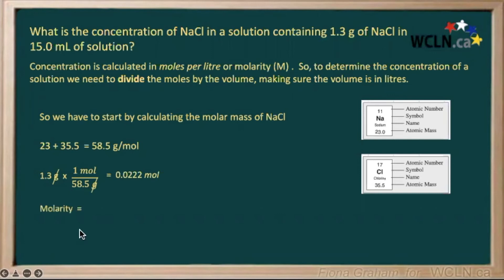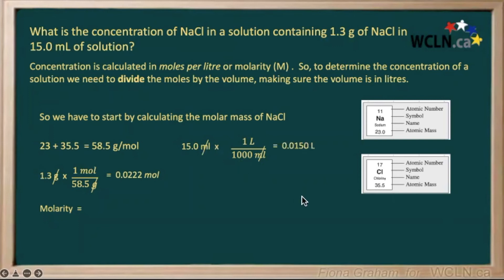Now we can continue on to calculate our molarity. But be careful — our volume needs to be in liters, and they are giving it to us here in milliliters. So let's convert that to liters. We have 15 milliliters times our conversion factor, which states 1 liter is 1,000 milliliters. Our units cross out again, giving us our final answer in liters: 15 divided by 1,000 gives us 0.015 liters.